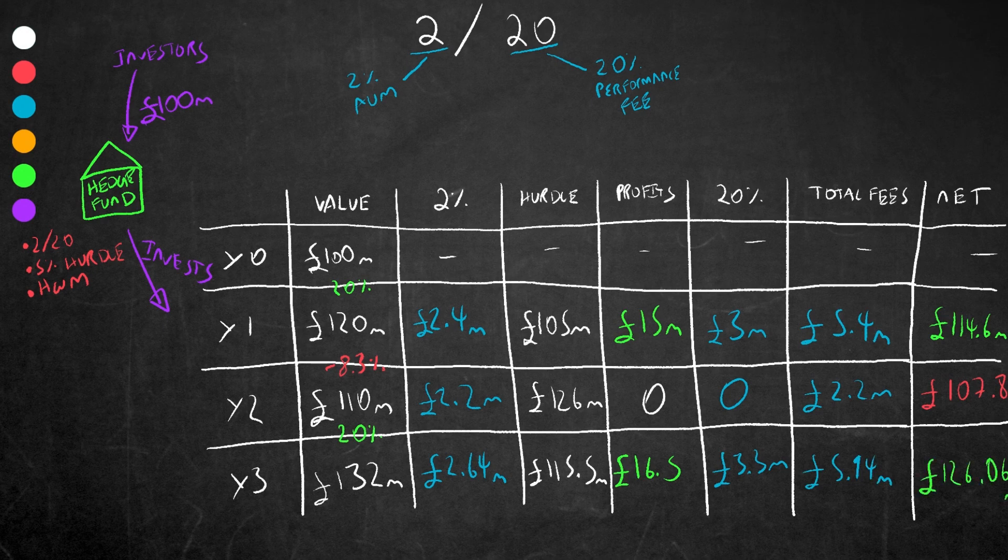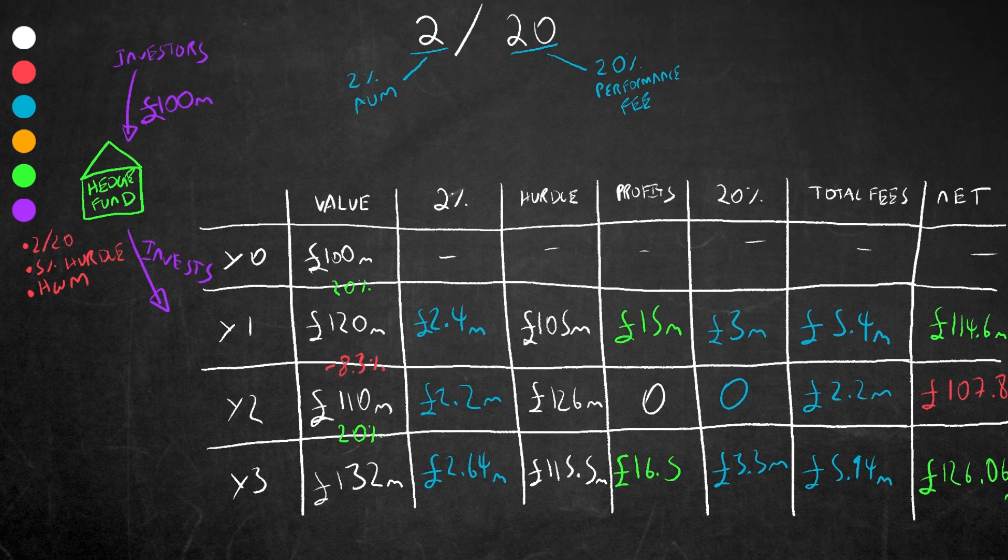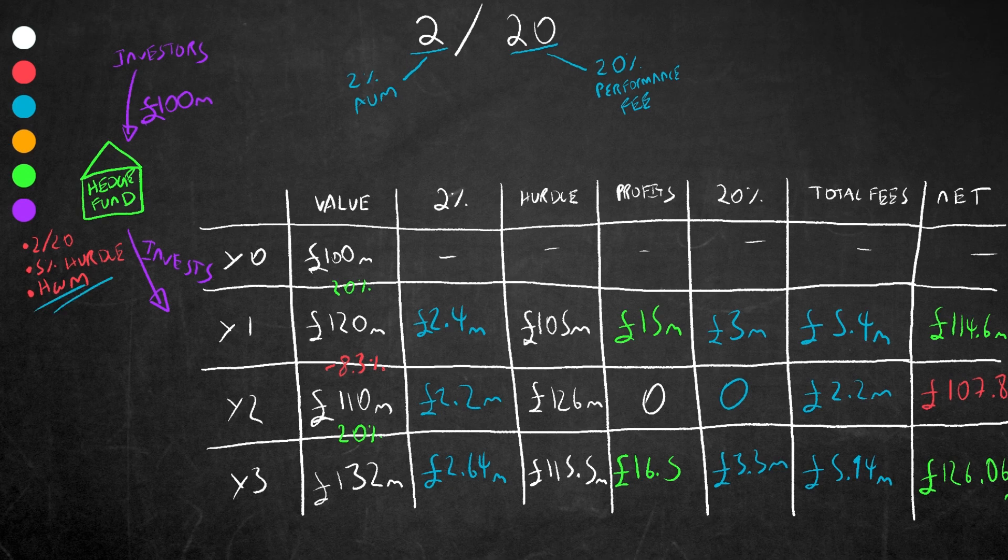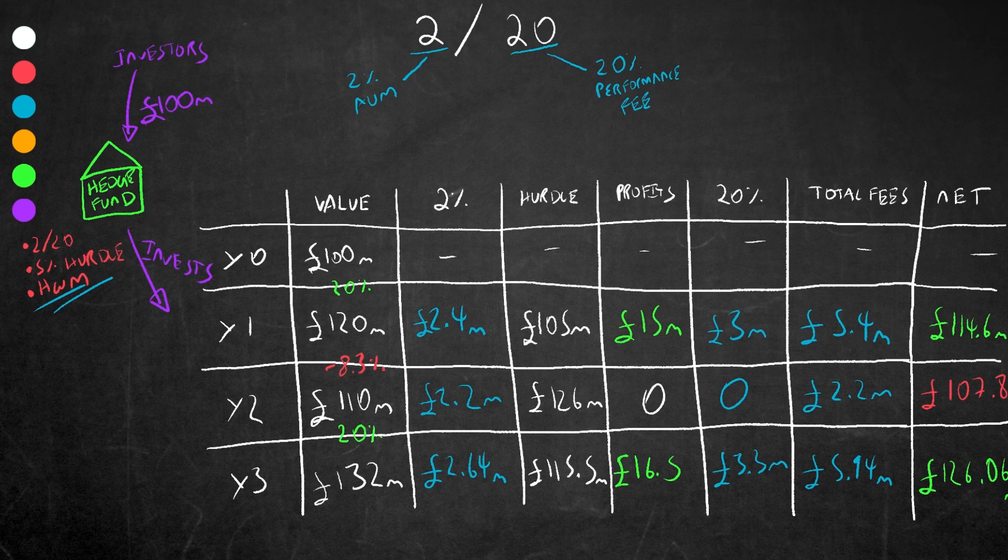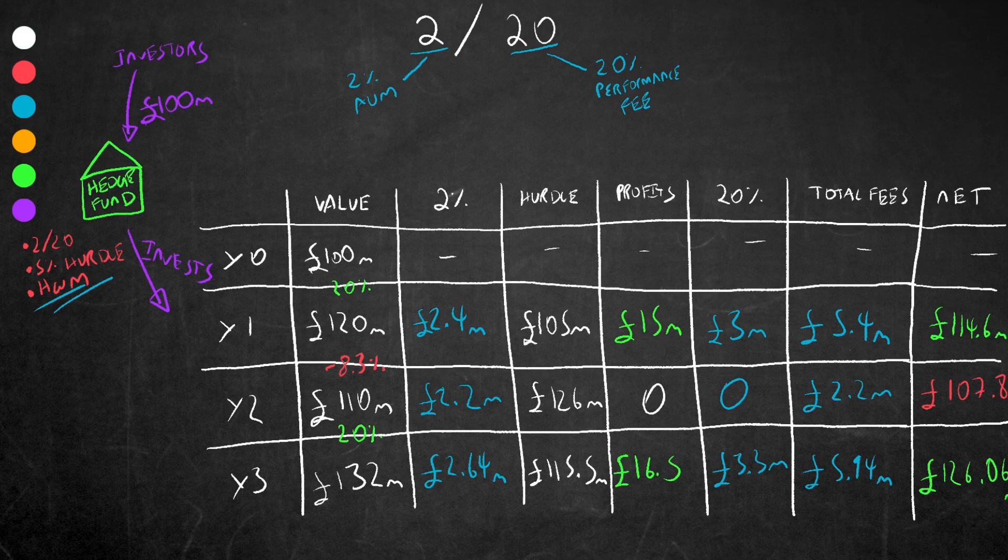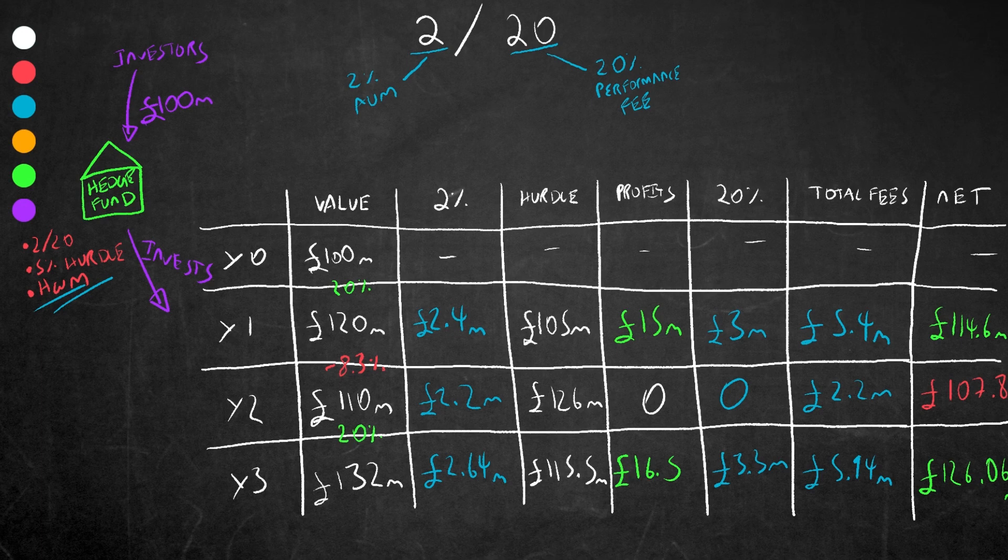Now, another thing we talked about in the structure was something called a high watermark. We're going to look at why this is sometimes applied. As you can see in this example, although in year two there was a loss, the hurdle rate still applied on the total gain from year two to three, which may seem unfair. As a result, the hedge fund has put in place a high watermark, meaning that the incentive fees are only charged if the fund reaches a level higher than its highest level before.